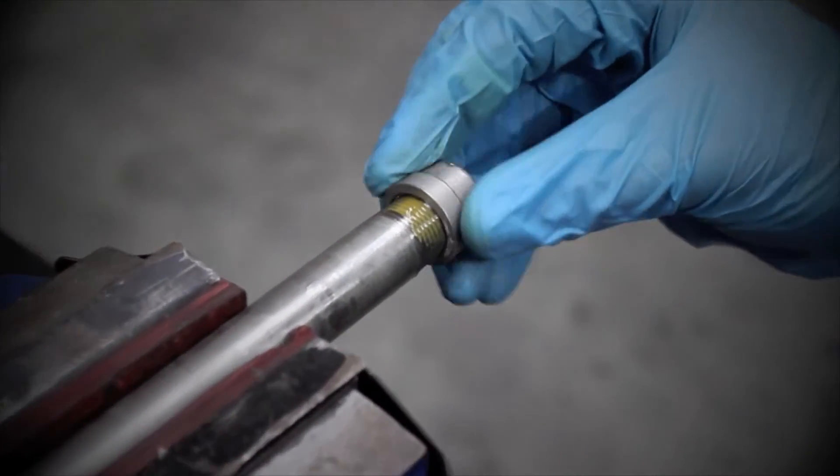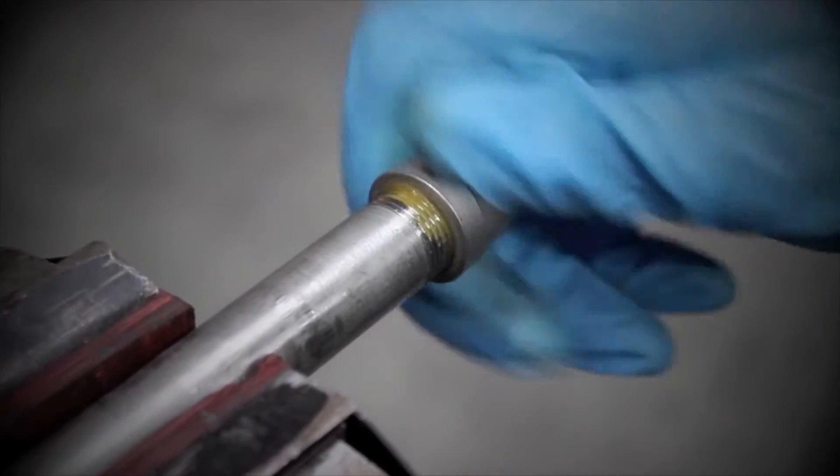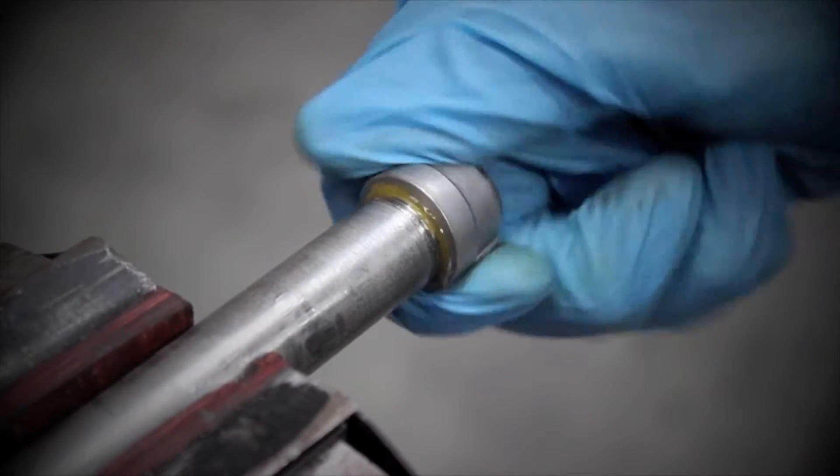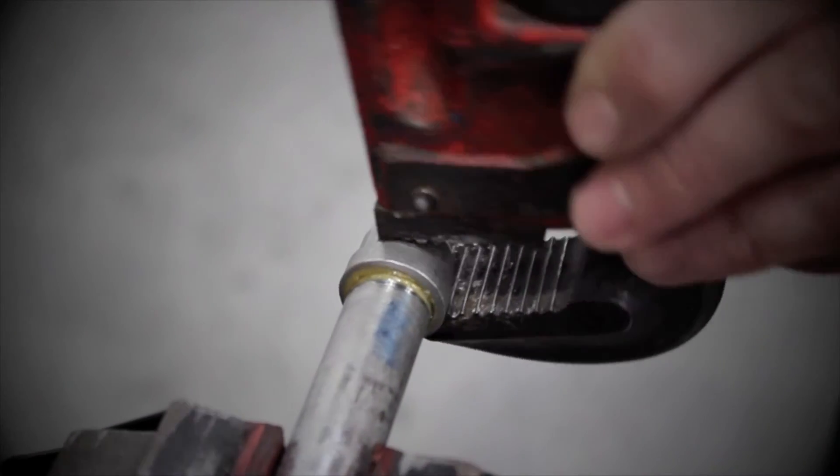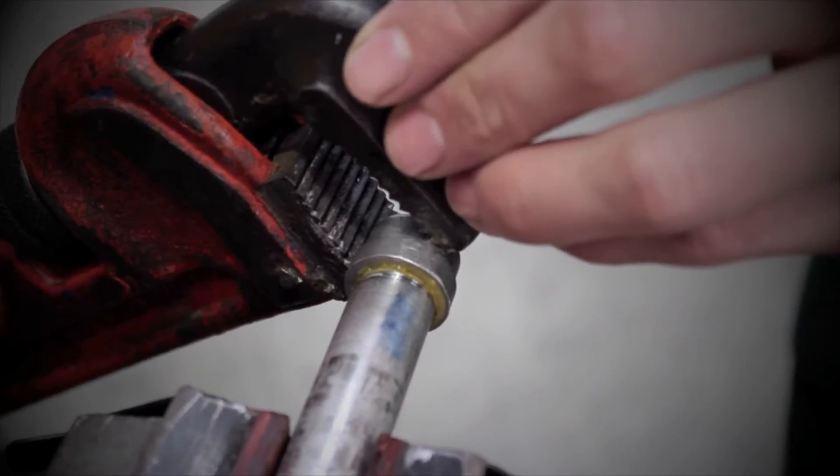Before the sealant sets, fit the cap to the feed pipe. Tighten clockwise until hand tight. Using Stilsons, tighten by one further complete turn.